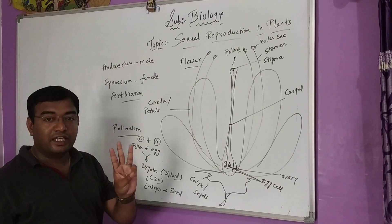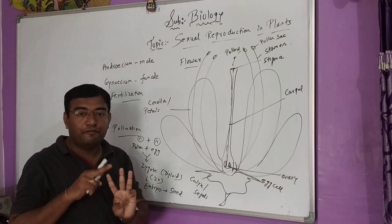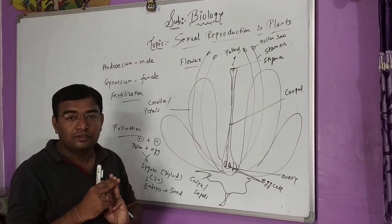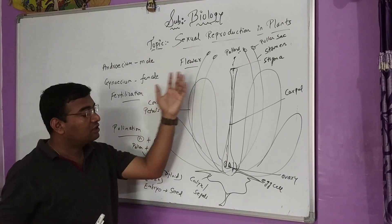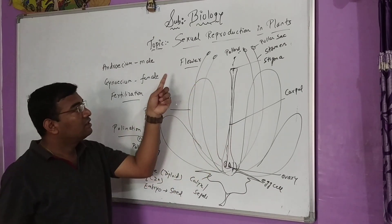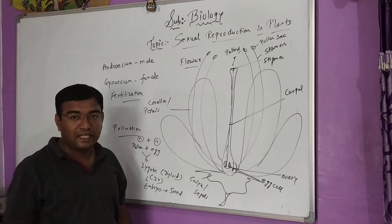This process takes place in three steps: pre-fertilization, fertilization, and post-fertilization. This is all about the descriptive part of sexual reproduction in plants.